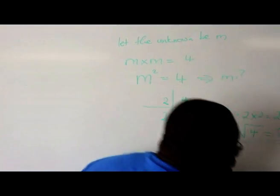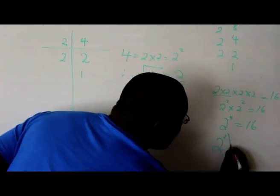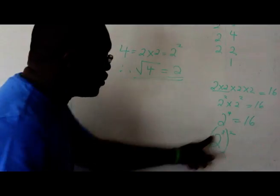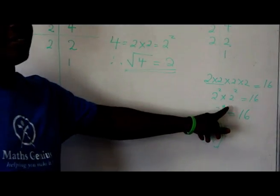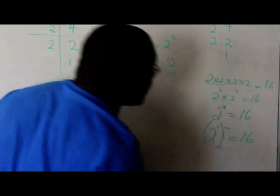But remember, if we're looking for the square root, the power has to be in relation to 2. So in this case, it would be 2 to the power of 2 squared, or 2 times 2 would give us the 4. So it's equal to 16.